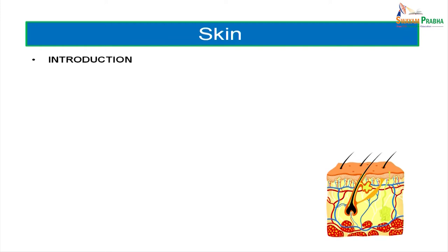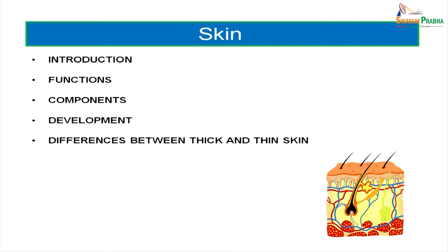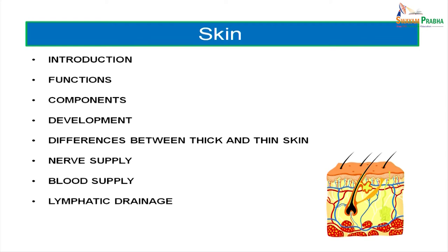We will be talking about the skin, briefly introducing it pertaining to its functions, components, development, differences between thick and thin skin, nerve supply, blood supply, lymphatic drainage, and a few clinical aspects. Skin is the biggest organ — the largest organ of the body. It is the largest sensory organ too. It contributes to about 16% of the total body weight and 8% of the total body mass. The surface area of skin accounts for about 1 to 2 meters square, and the thickness varies from 0.3 mm to 3 millimeters.